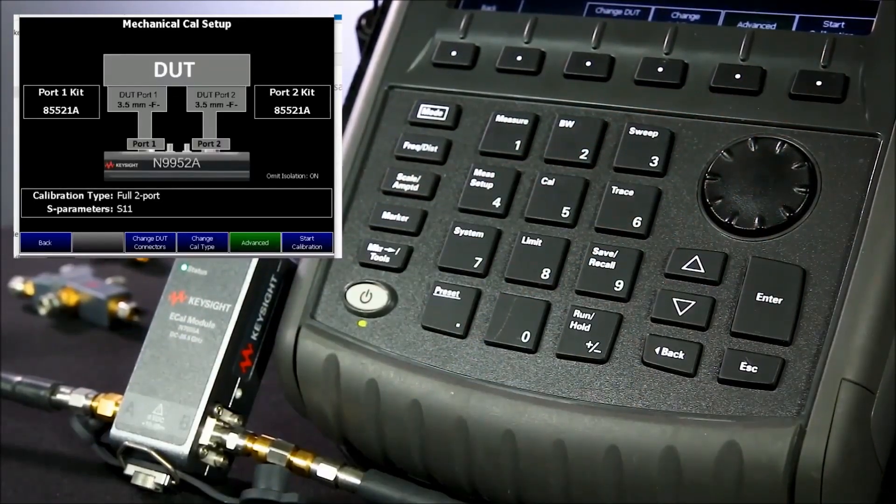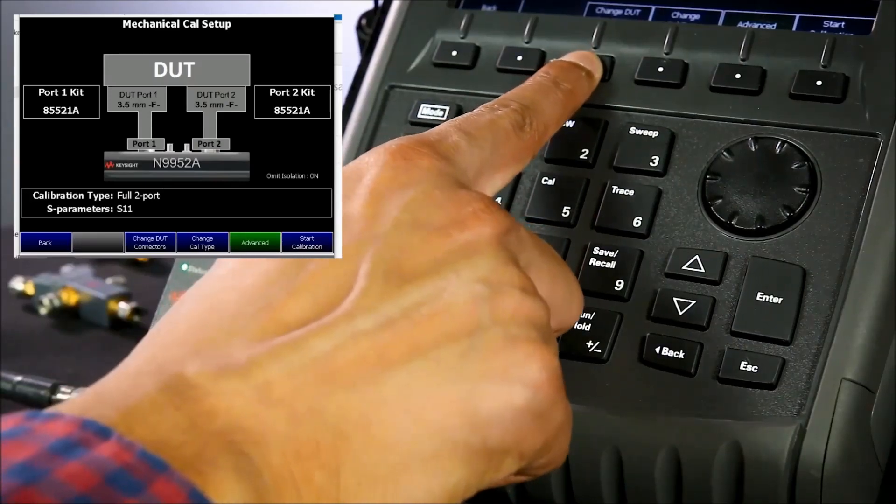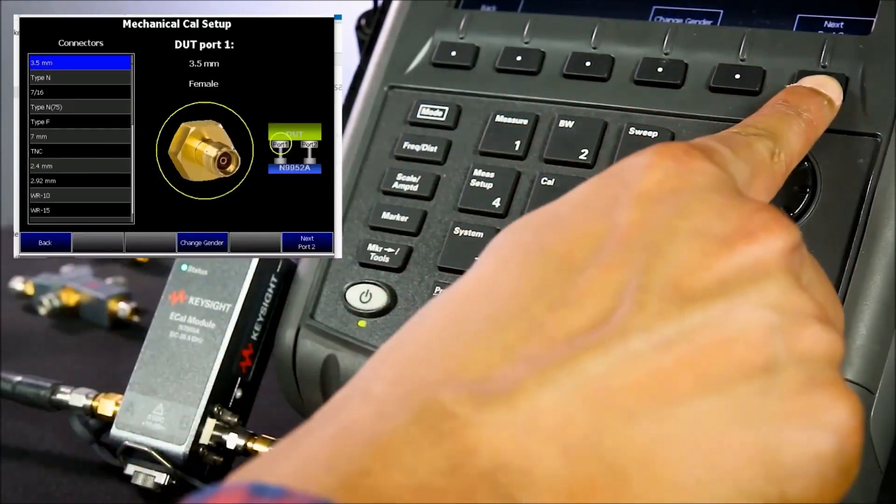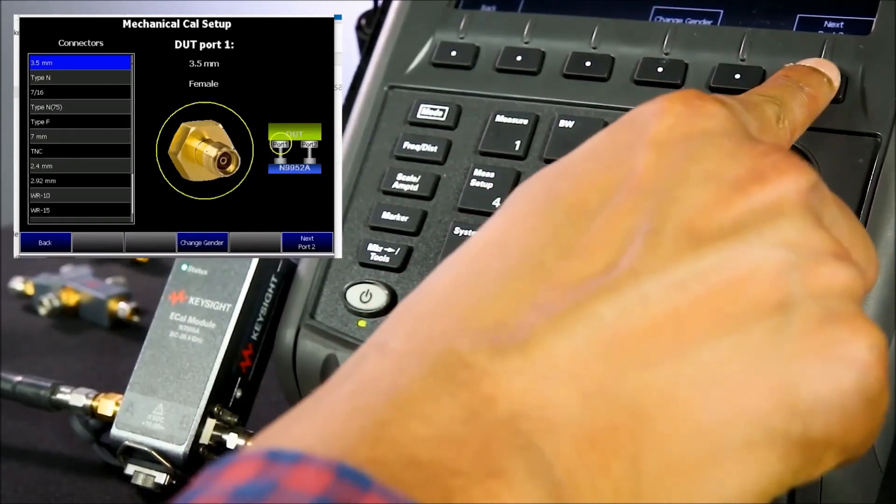We need to make sure that the correct DUT connectors are selected, and in this case, the e-CAL module has a 3.5mm female on port one. Then select next, port two, and a 3.5mm male on port two, so I will change the gender.